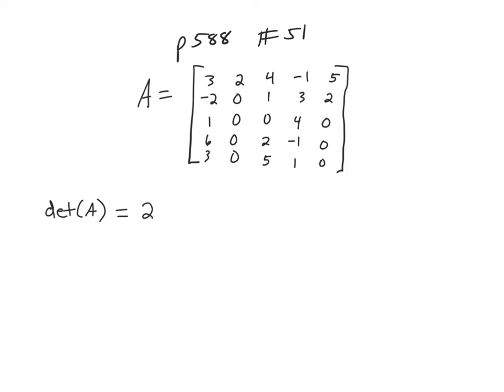All I need is the 2 times its minor. So I'm going to write that a little bit bigger because I'm going to need more room. So when I write the minor, I need to look at taking out this row and this column because I'm doing the minor for this number. So when I do that, the numbers that are left, I've got negative 2, 1, 6, 3, and then 1, 0, 2, 5, 3, 4, negative 1, 1, 2, 0, 0, 0.